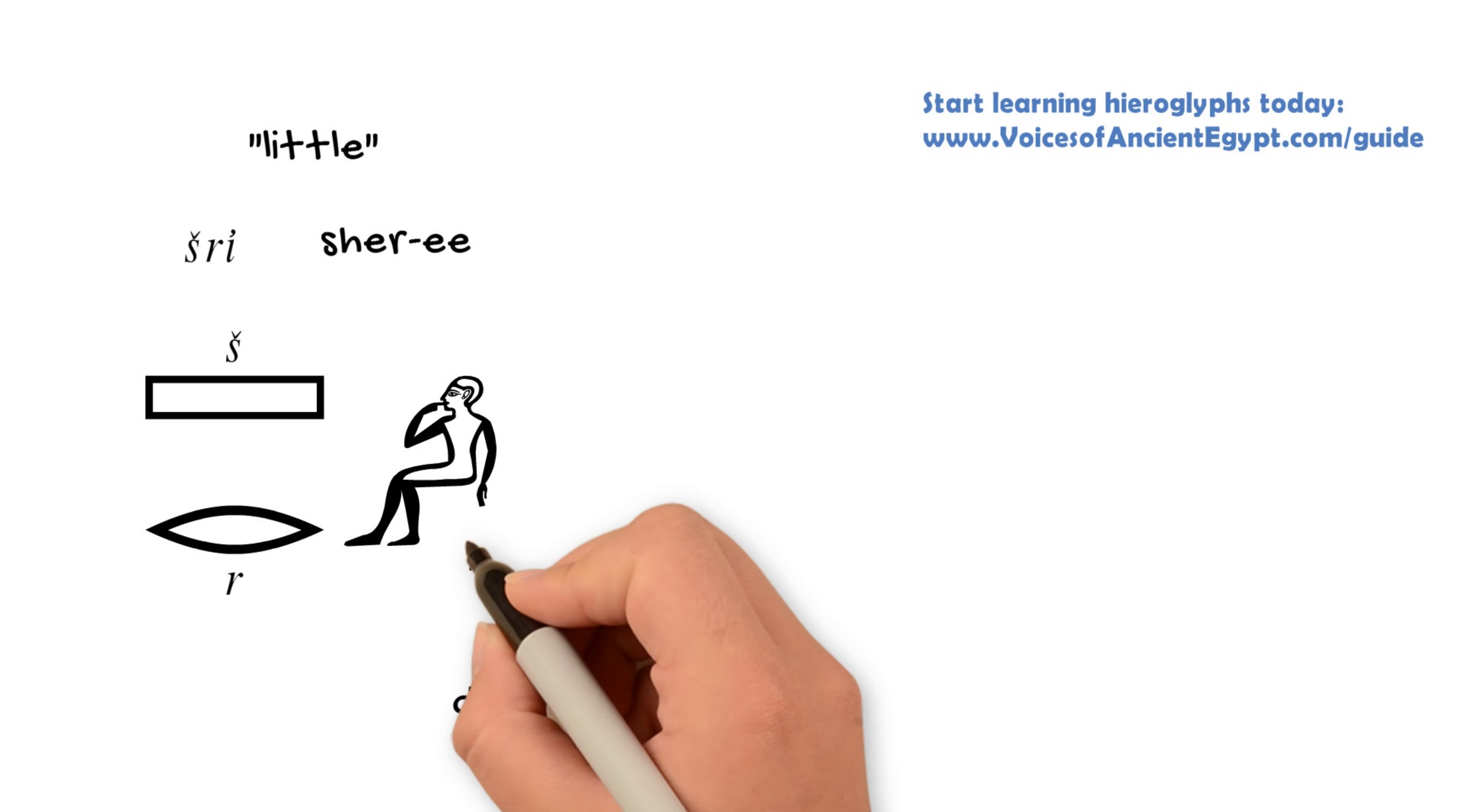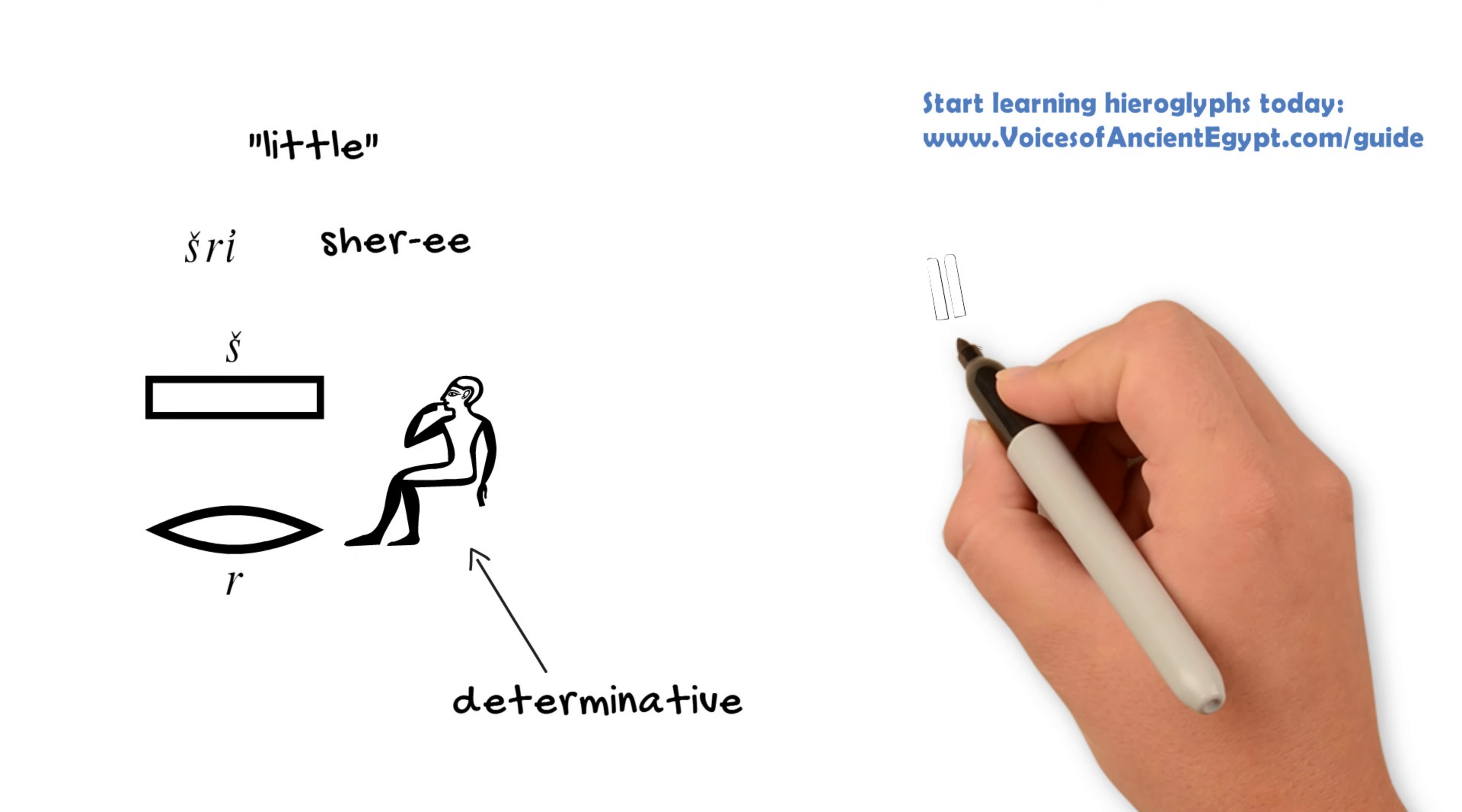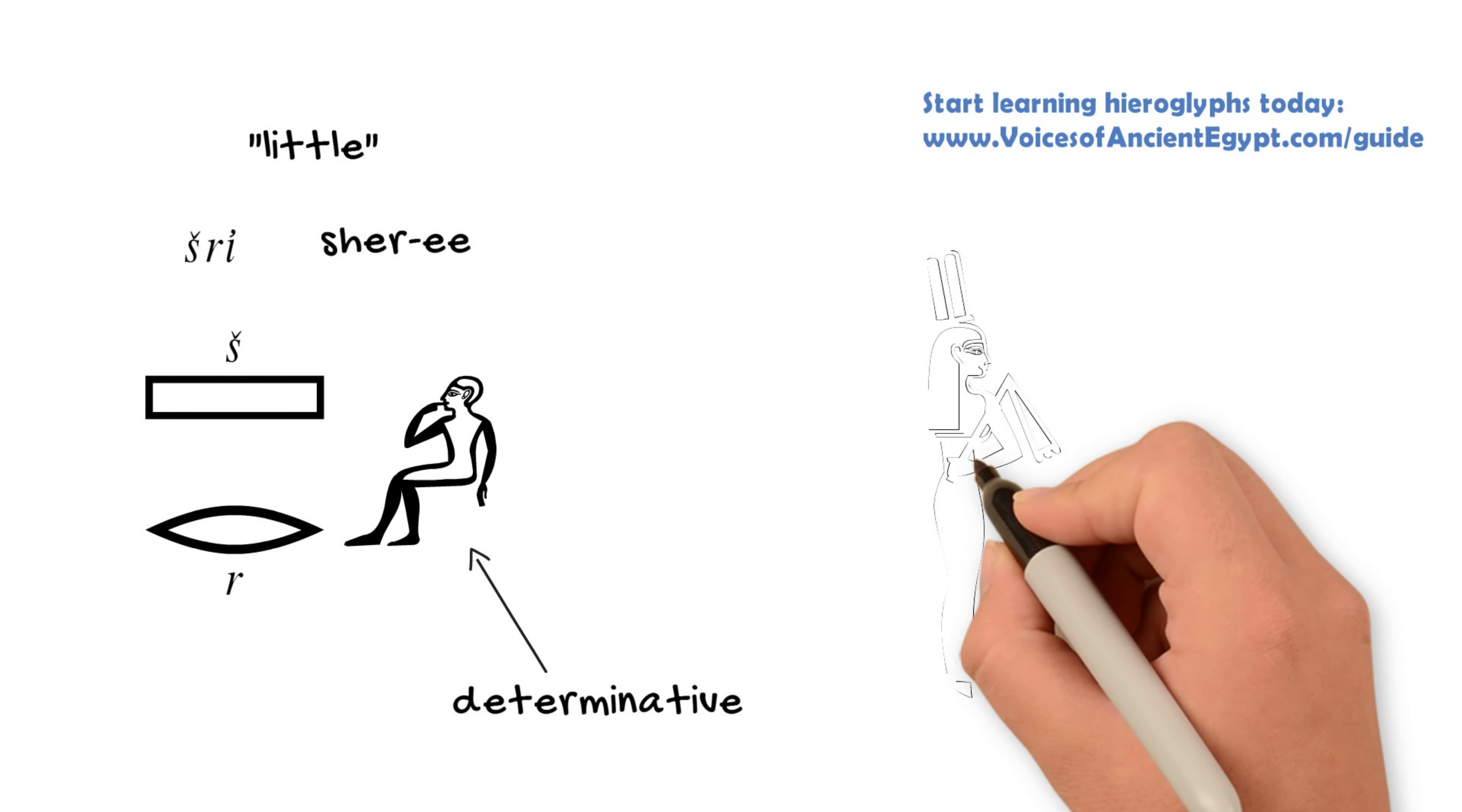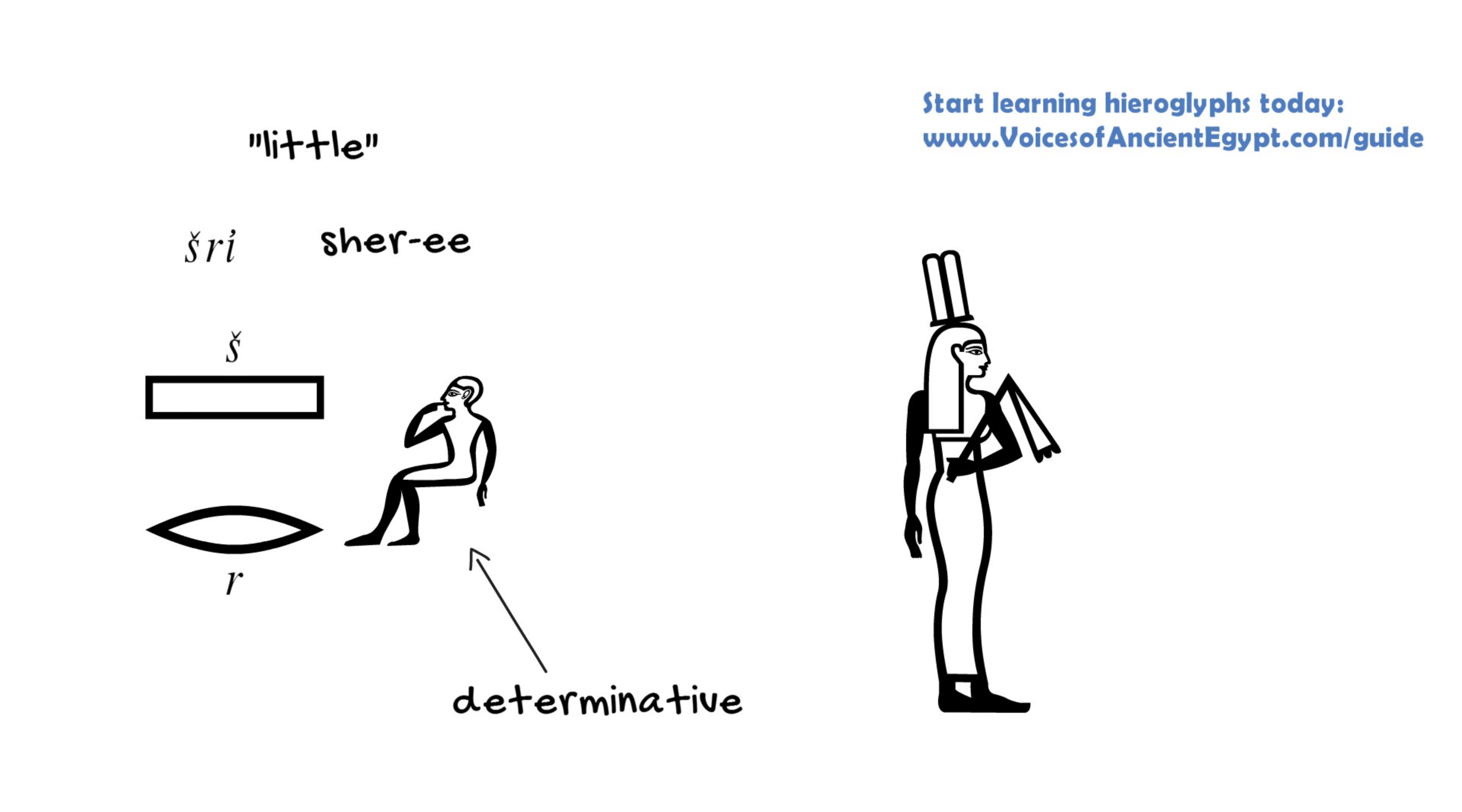Of course, like all names, sometimes they just get passed down through families too, and they don't necessarily mean that. But one famous person you'll see with this is the queen of the 17th dynasty named Teddy Sherry. Now, as you can see in this example, sherry can be written sometimes just with the child hieroglyph and not fully spelled out, as happens with a lot of Egyptian words.